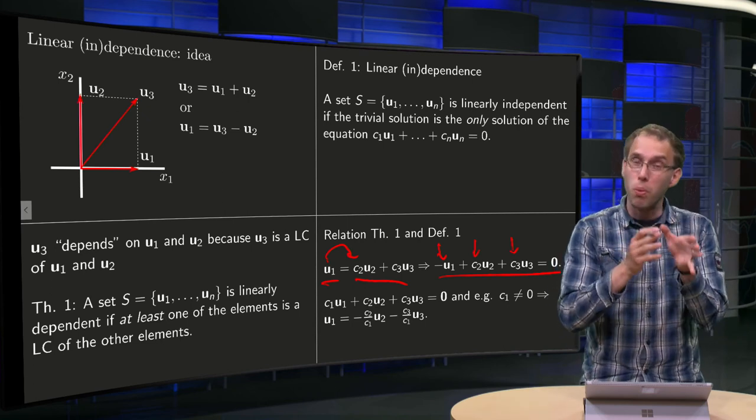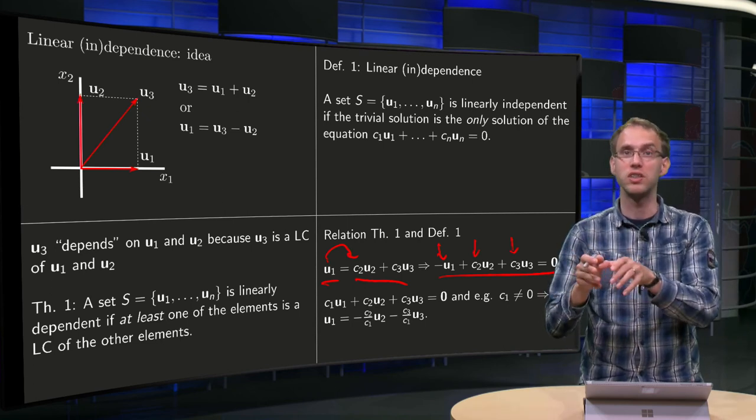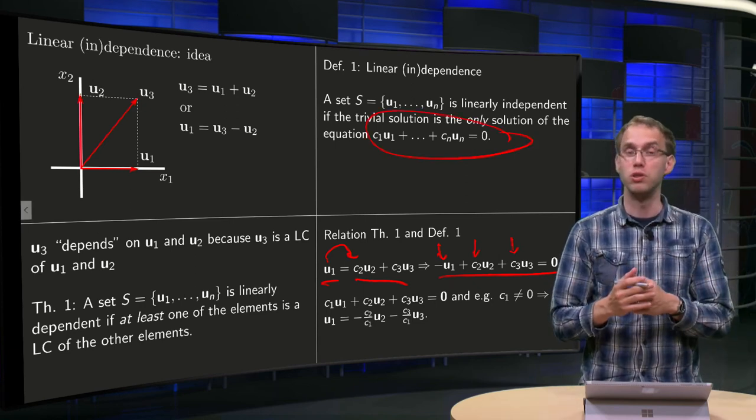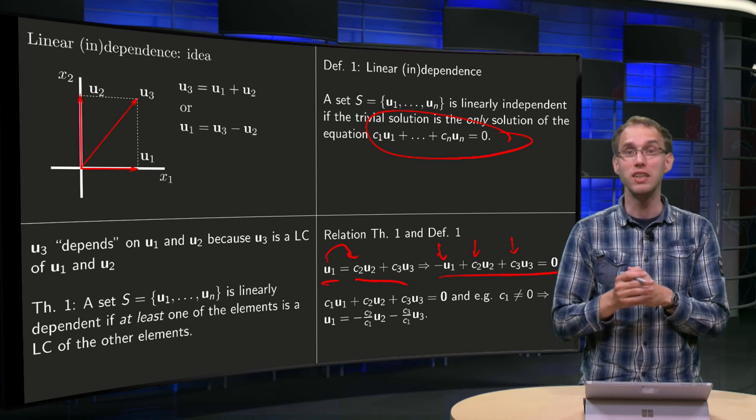So you see that if one vector is a linear combination of other vectors, then the vector equation over here automatically has a non-trivial solution, which means also in the sense of the definition the set is dependent.